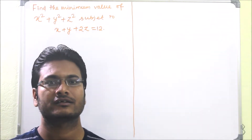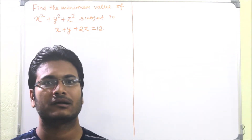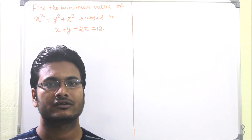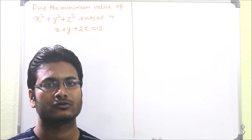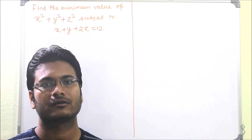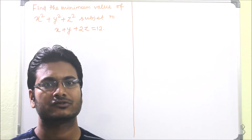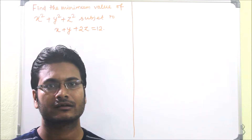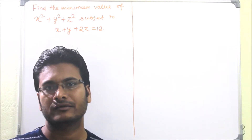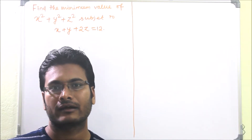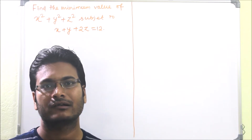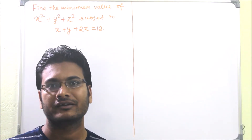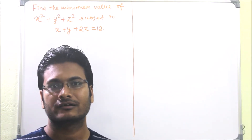Today we will discuss multivariable optimization problems with equality constraints. We will solve one problem through the direct substitution method — how to use the direct substitution method and how to get the minimum and maximum of a multivariable function using equality constraints.